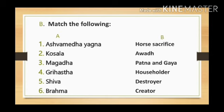Number 4 — Grihastha: which means householder. Number 5 — Shiva: who is the destroyer. And number 6 — Brahma: who is the creator.